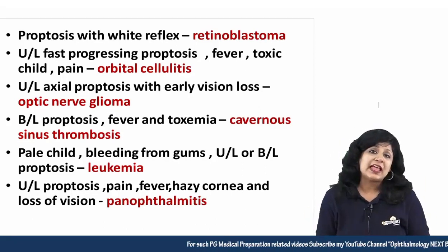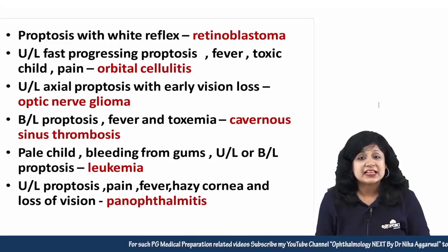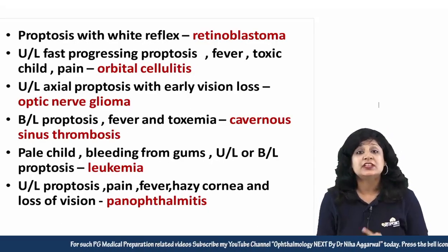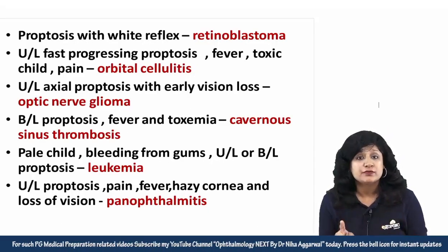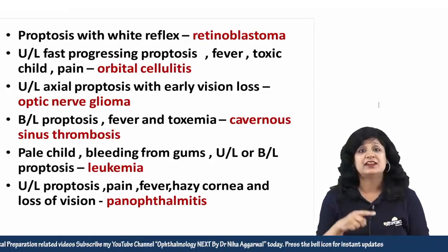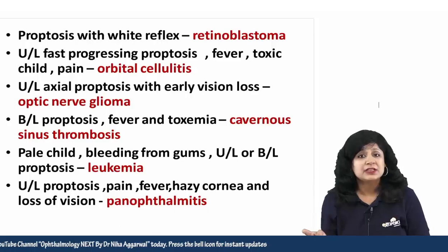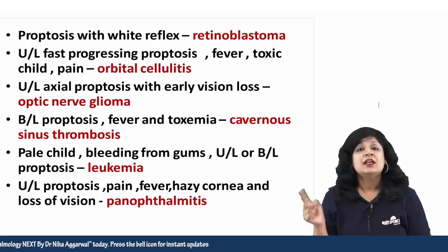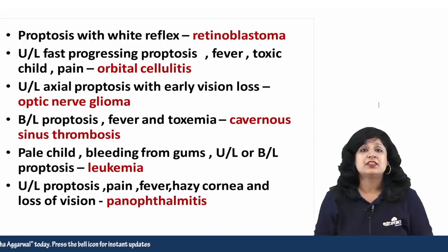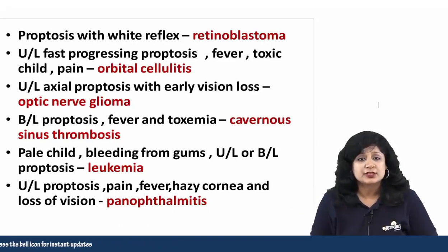If you have unilateral axial proptosis with early loss of vision, then it is optic nerve involvement — optic nerve glioma, associated with neurofibromatosis.